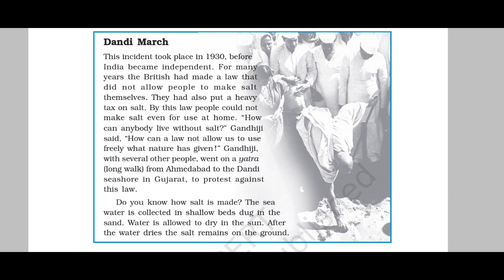Salt banane ka jo process hai woh evaporation par based hota hai. Evaporation is the process of changing water into vapors on heating — water ko jab heat milti hai toh woh vapors mein convert ho jata hai. Salt banane ke liye, jo sea water hota hai — sea water bahut zyada saline hota hai, bahut zyada usme salt hota hai — toh samudra ke kinaare par gadde banaye jaate hain, sea water fill kar diya jata hai, aur usse aise hi chhod diya jata hai dry hone ke liye. Sun ki heat se water vapors mein convert hokar ud jata hai, aur neeche bachta hai salt — aur us salt ko collect kar liya jata hai.